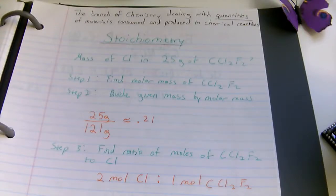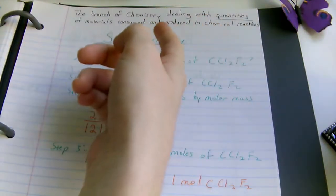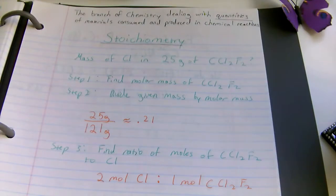Hi everyone, thanks for checking out this video. Today we're going to talk a little bit about stoichiometry, basically the branch of chemistry that deals with quantities of materials consumed and produced in chemical reactions.